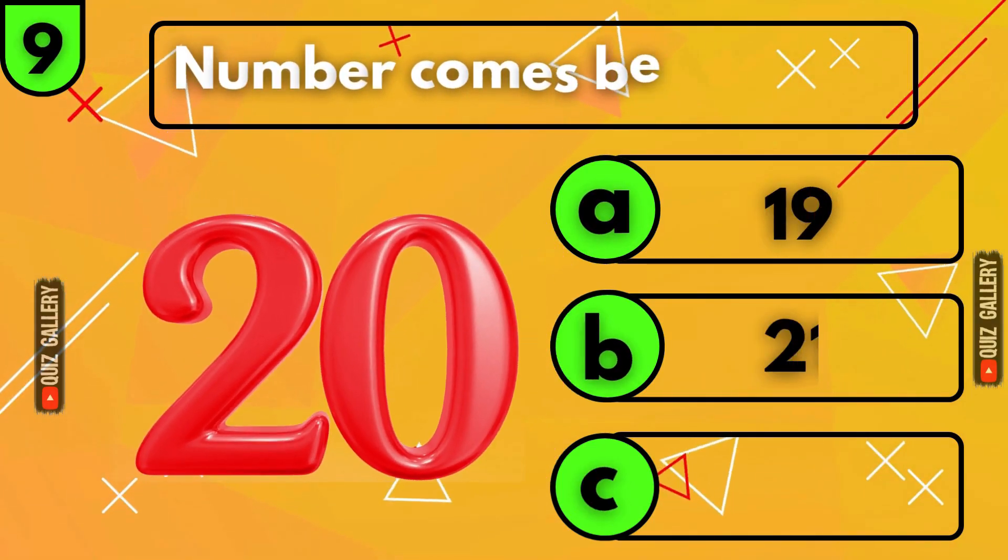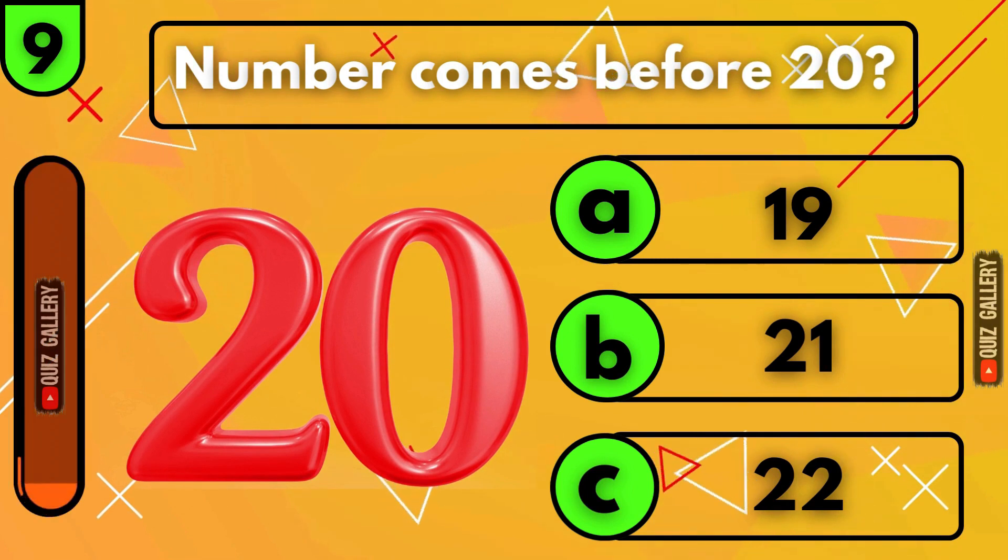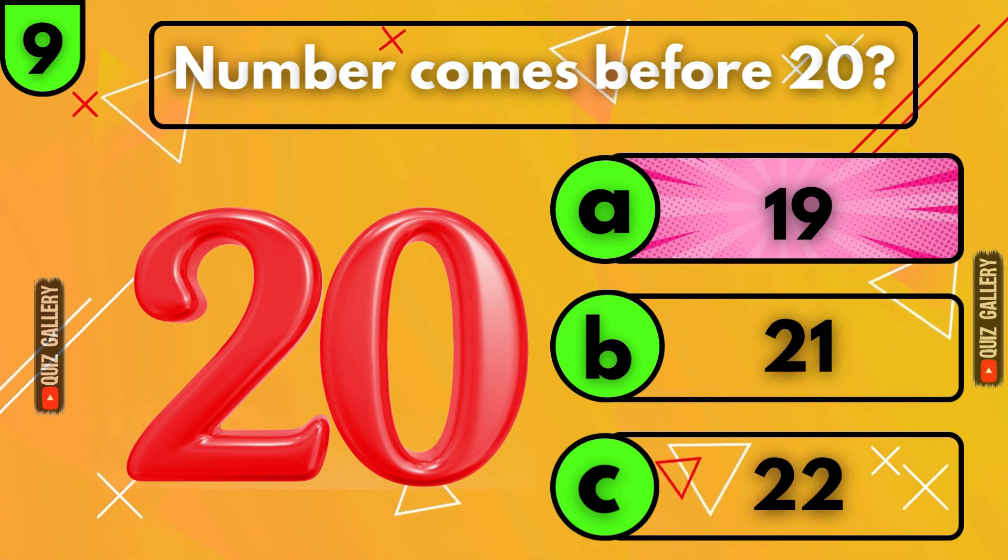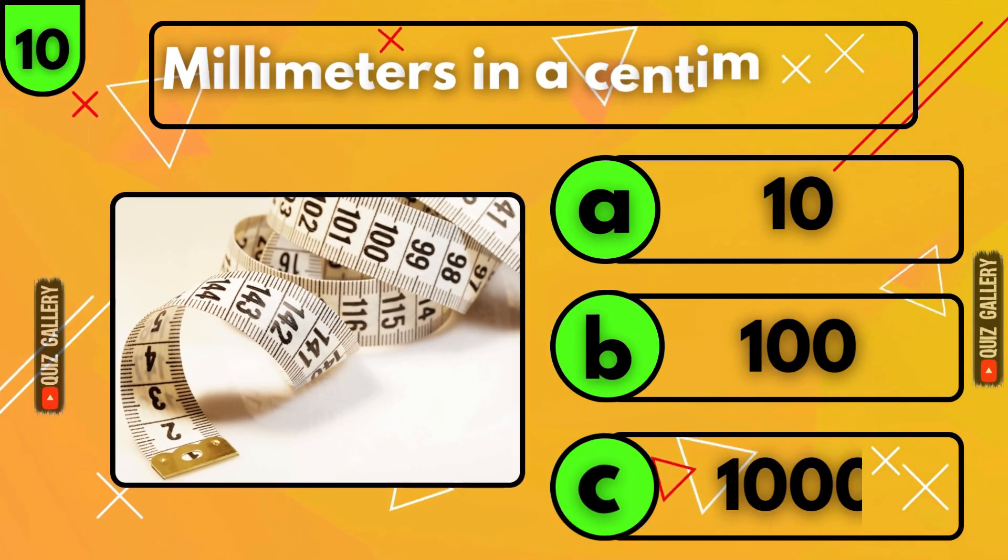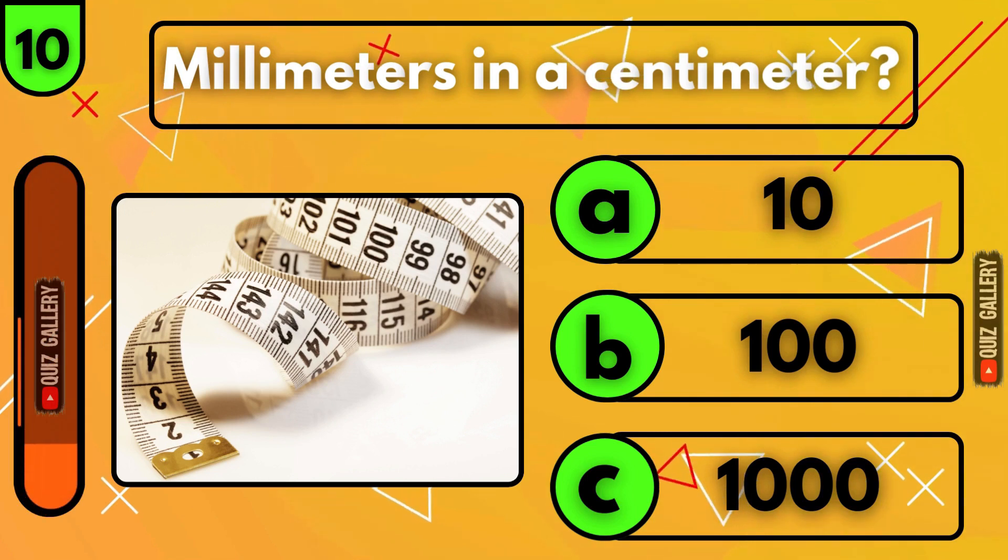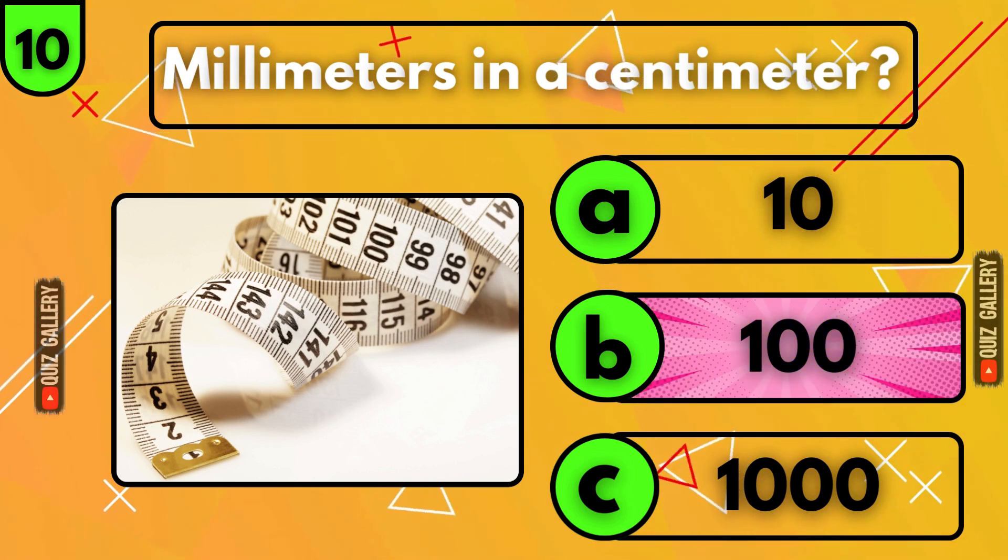What number comes before twenty? The number nineteen! How many millimeters are in a centimeter? Hundred millimeters!